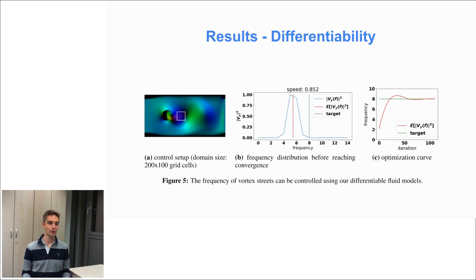And for the loss, we then took the square difference of that mean value to a different target frequency here marked in green. And as you can see here on the right, after some iterations using gradient descent, we can really approach this target frequency.